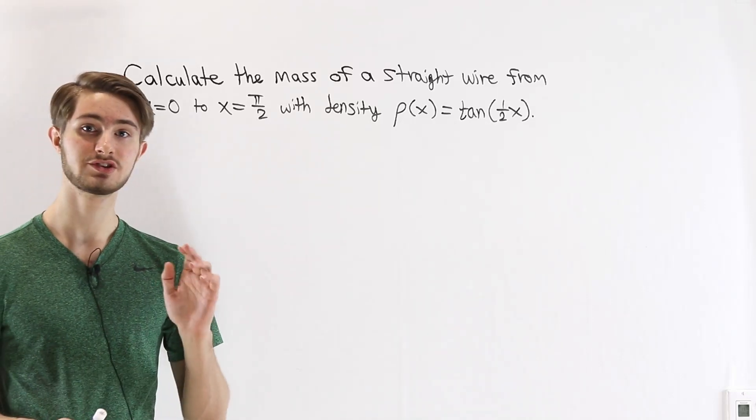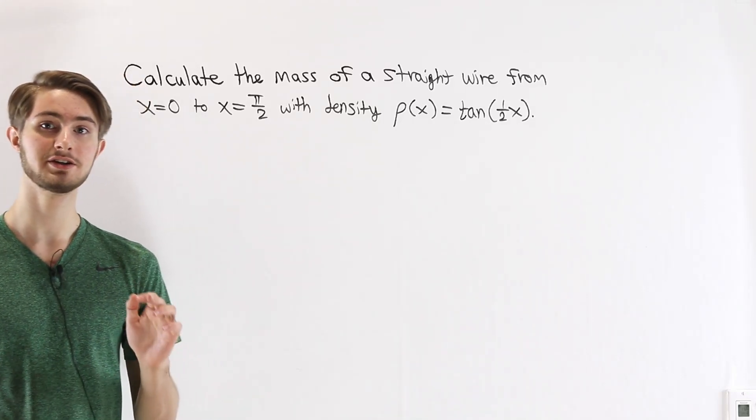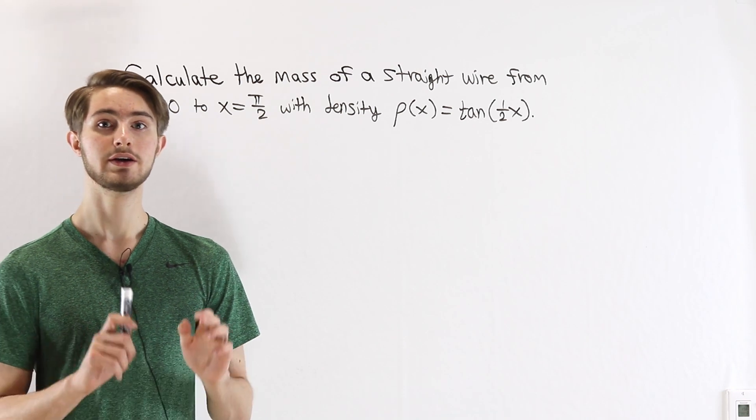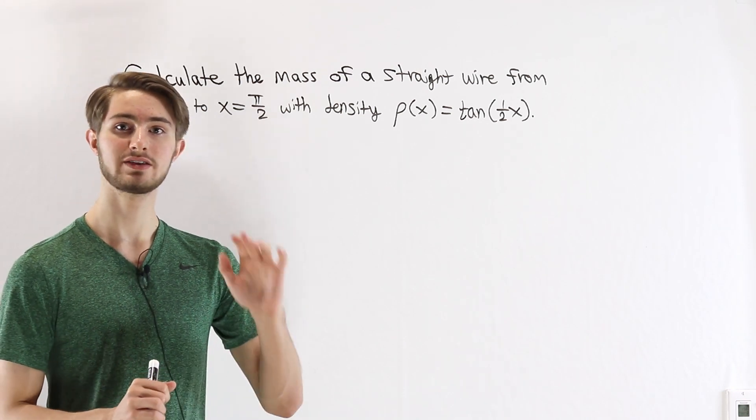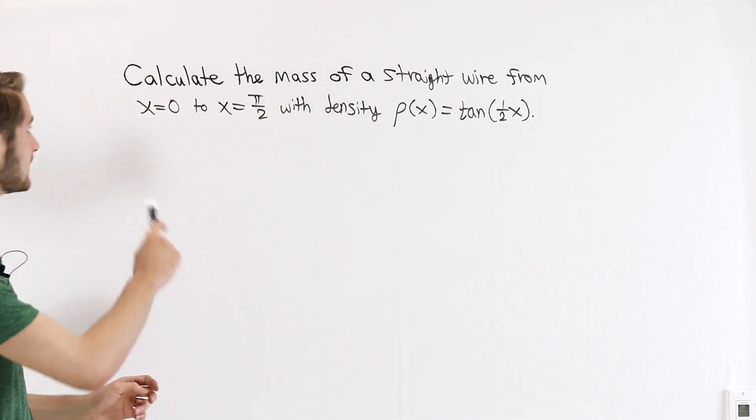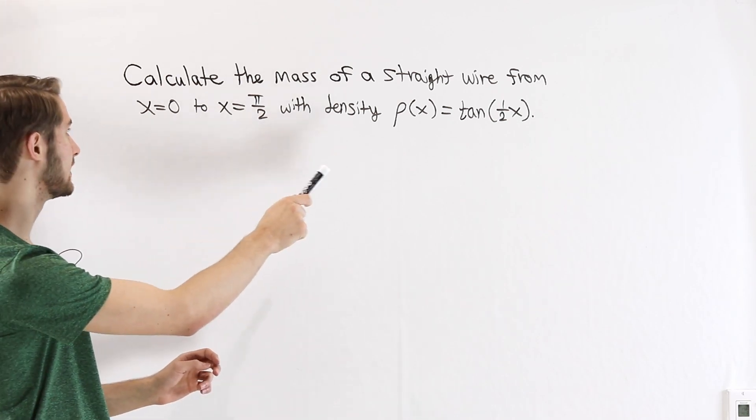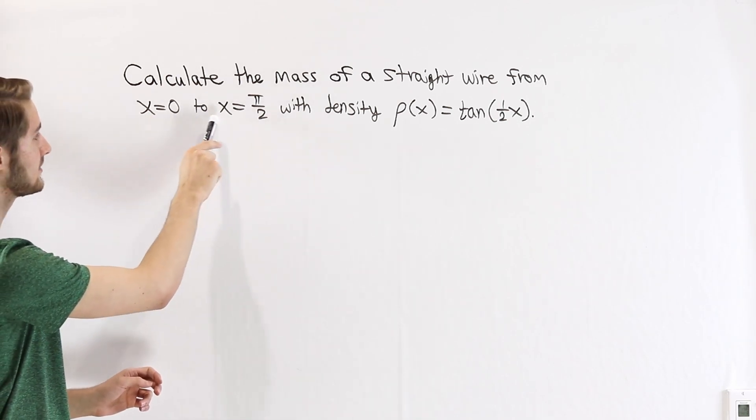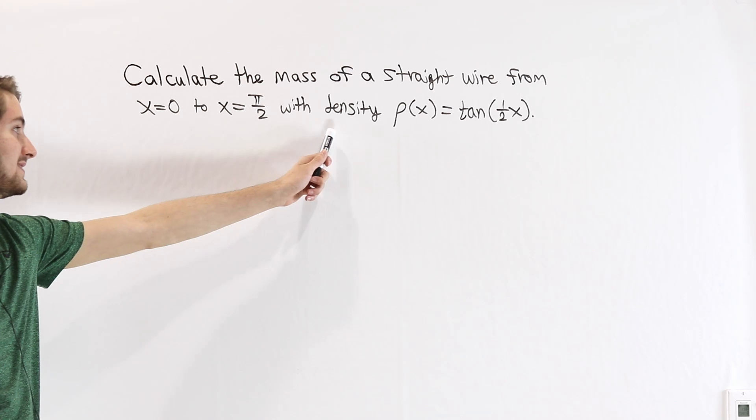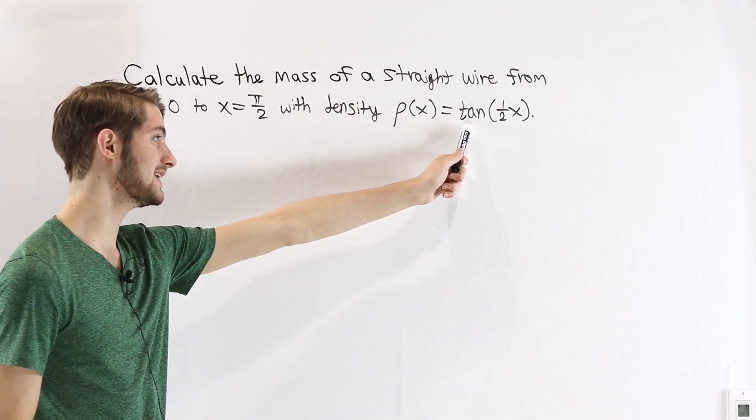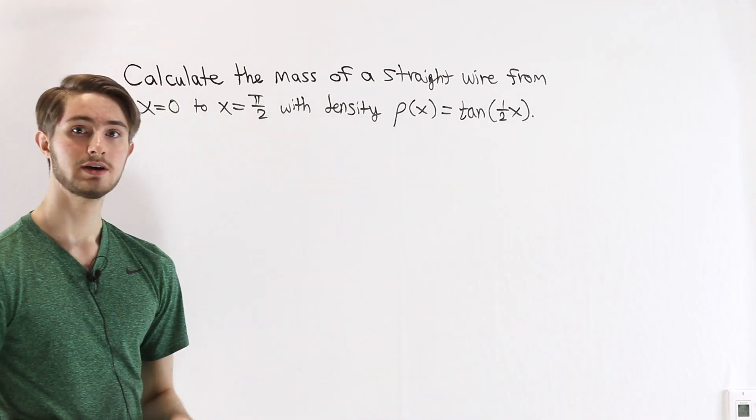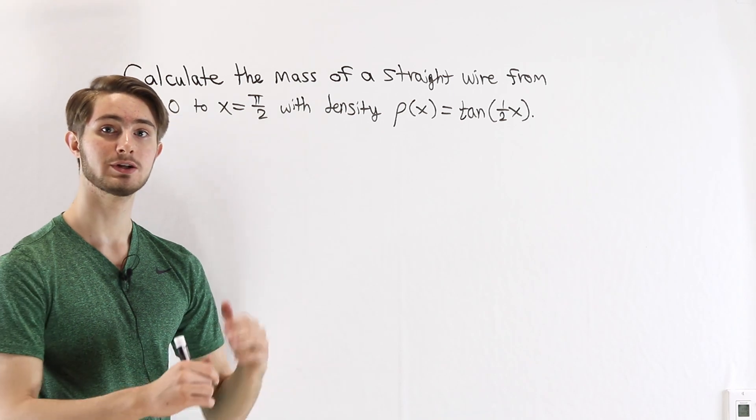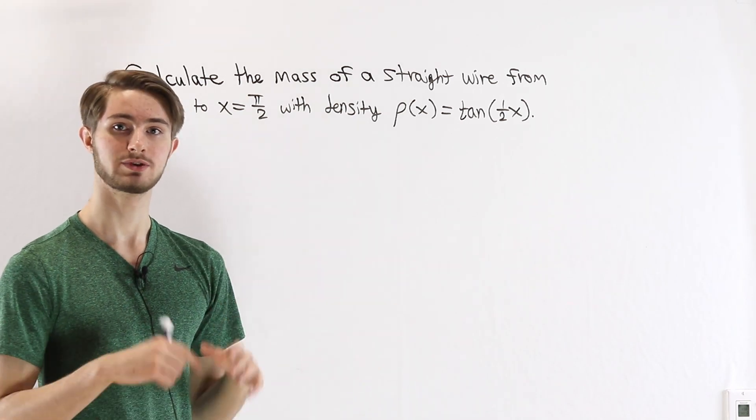We are going to talk about how to use a scalar field line integral to calculate the mass of a curved wire. To do that, we're going to start with a simpler example. Calculate the mass of a straight wire from x equals 0 to x equals π/2, with density ρ(x) equals the tangent of 1/2 x, and we're going to use this simpler example to build up to the instance with a curved wire.